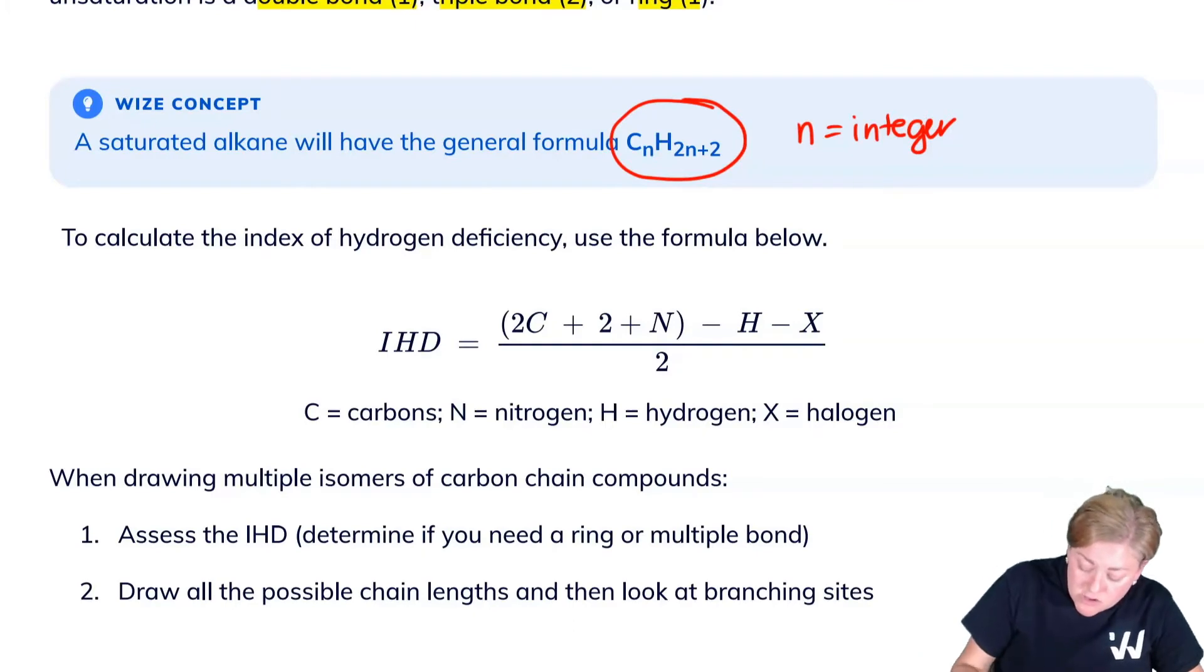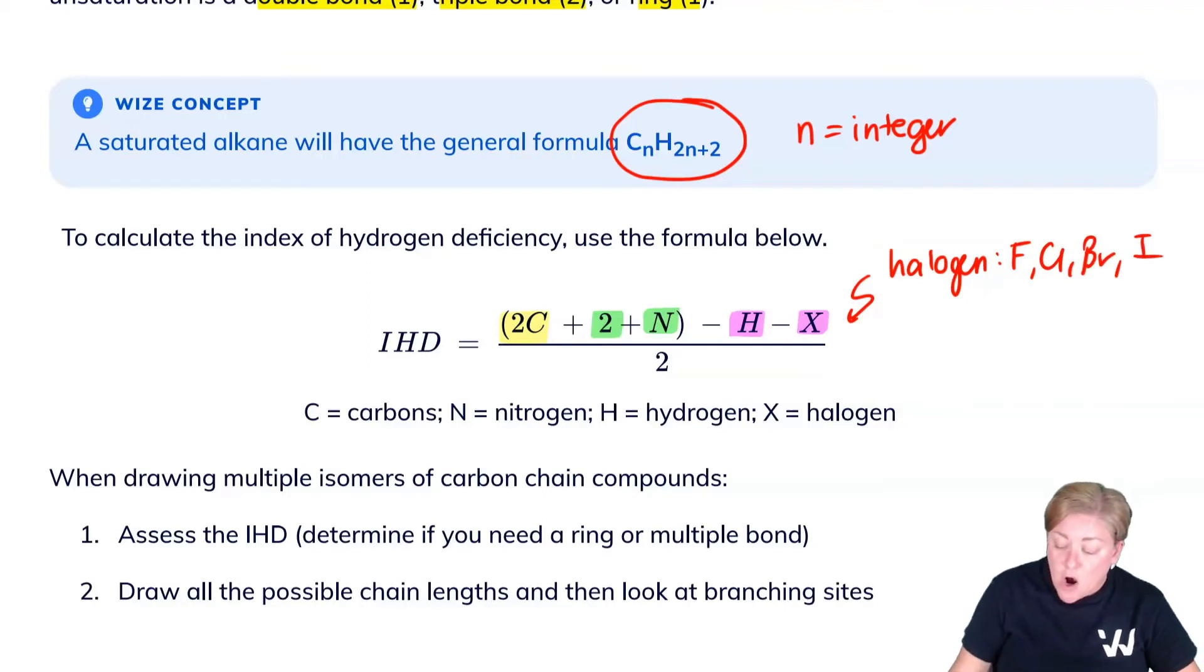You have 2 times the number of carbons plus 2 plus the number of nitrogens minus the number of hydrogens minus the number of halogens, all divided by 2. The halogens are fluorine, chlorine, bromine, and iodine. You'll notice that oxygen does not factor into this formula. Watch out for that trap - that's a really common mistake students make.